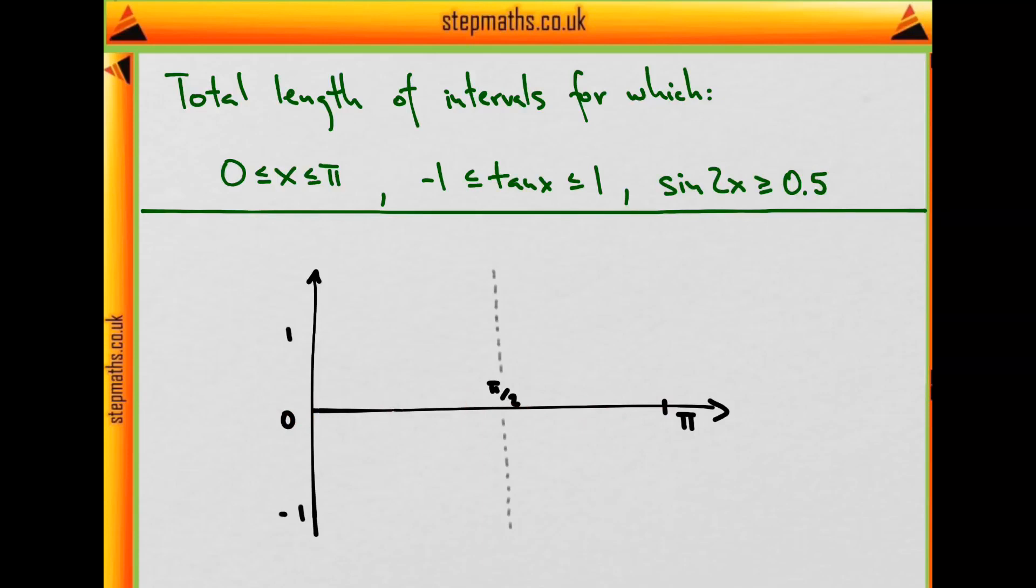The first function is tan of x, which starts at the point 0, 0, then goes up and approaches infinity. As x goes to π by 2, there's an asymptote at π by 2, and a similar thing happening on the other side of this asymptote, except this time to negative infinity.